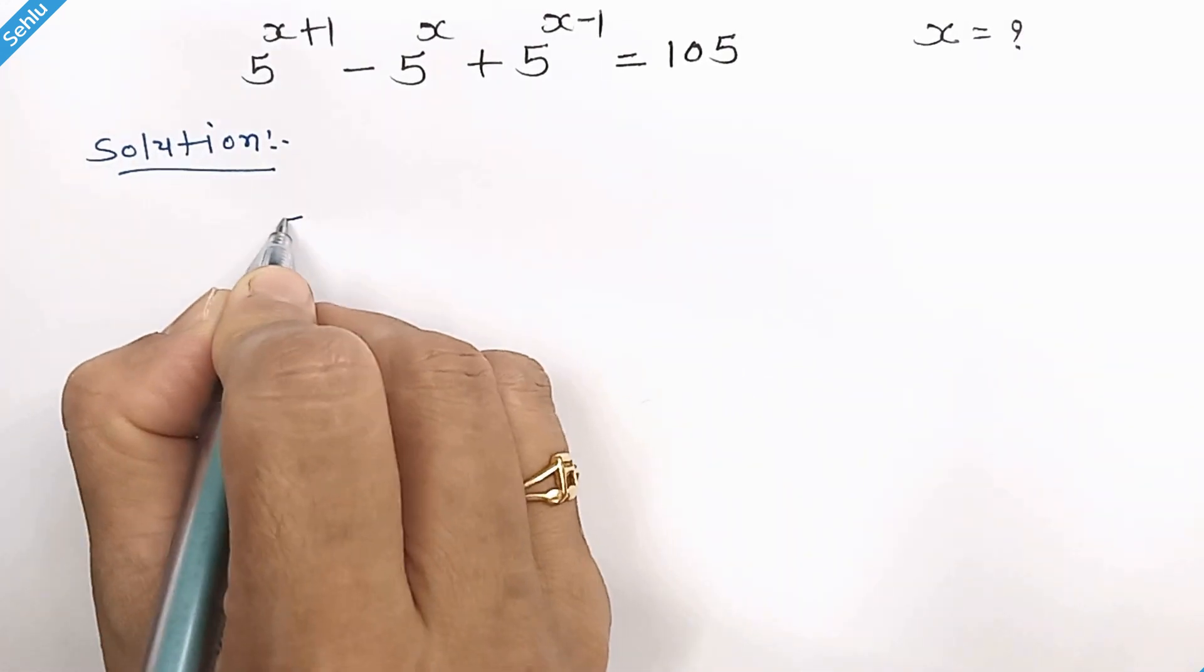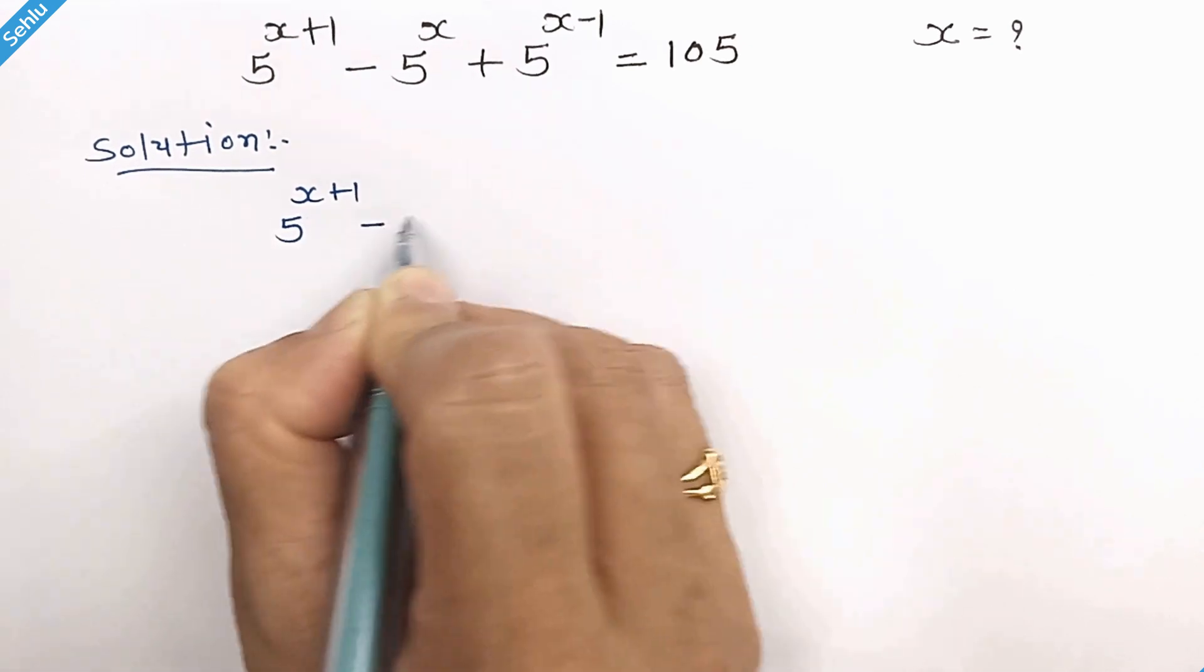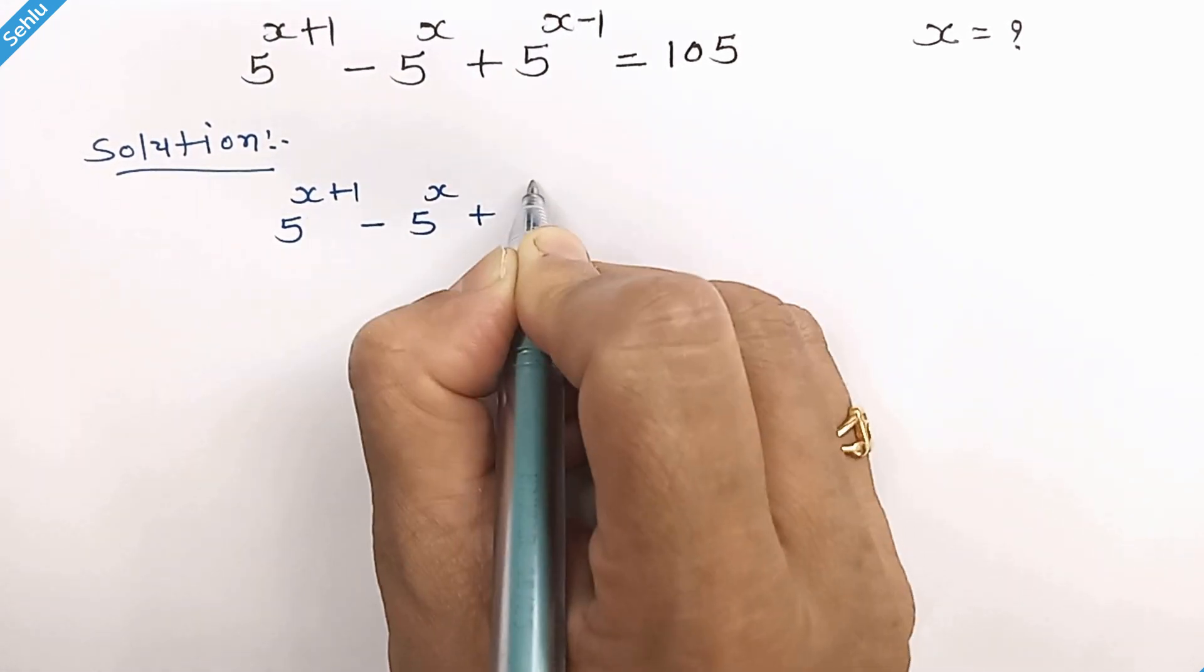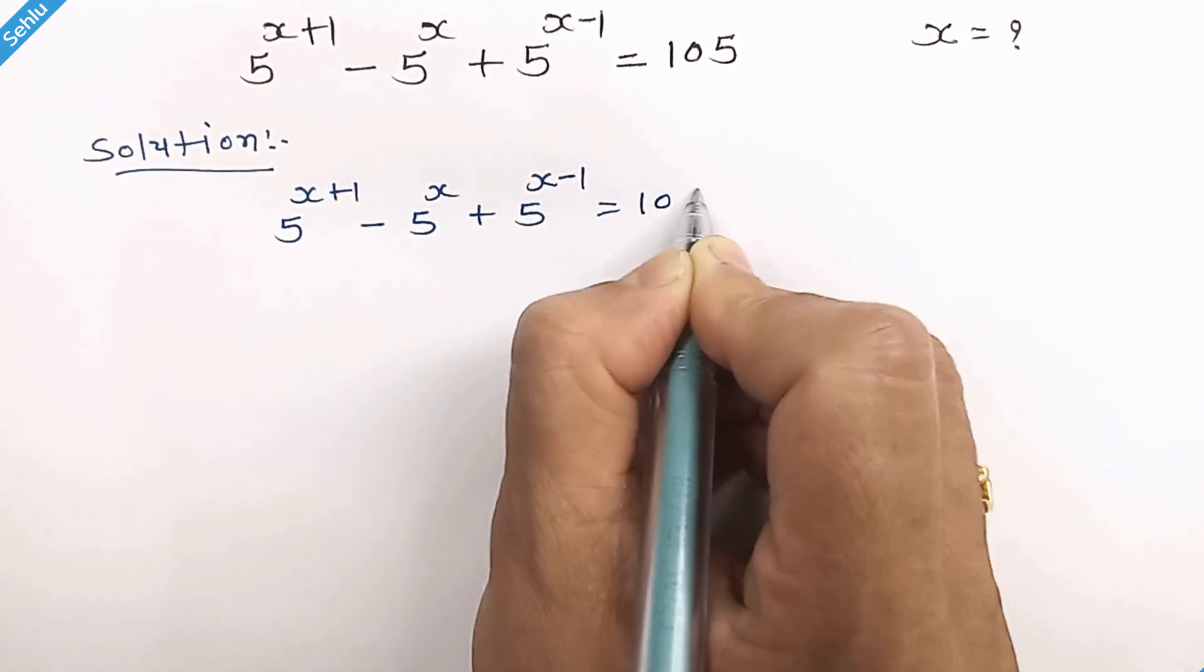Our question is 5 to the power x plus 1 minus 5 to the power x plus 5 to the power x minus 1 equals 105.